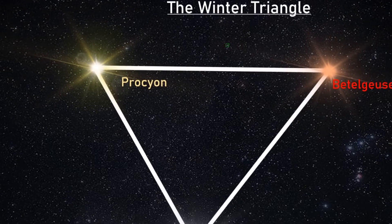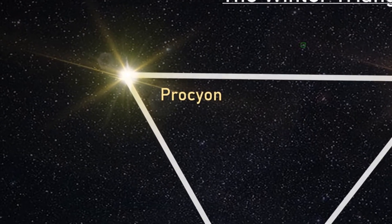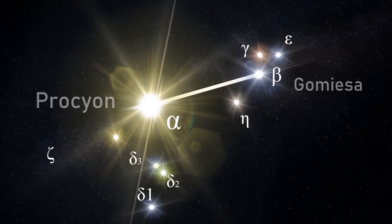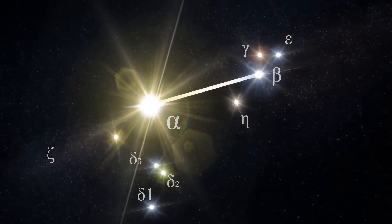It carries the designation of Alpha Canis Minoris, obviously being the brightest star in the constellation as viewed from Earth, although Gomesa, Beta Canis Minoris, is actually a more powerful star.